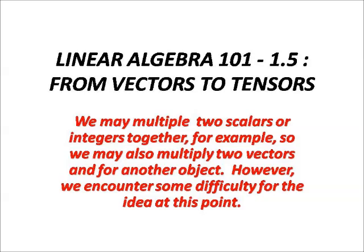We may multiply two scalars or integers together. So we may also multiply two vectors to form another object. However, we encounter some difficulty with this idea at this point.